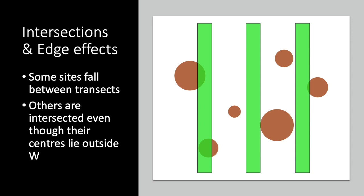By contrast, when sites are unobtrusive and relatively small, such as small, roughly circular sherd or lithic scatters, some sites could occur between the transects and not be intersected at all, while others fall partly within the transect areas and might be detected even though their centers lie outside the transect area.